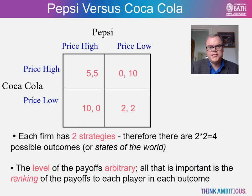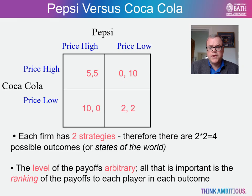We can illustrate this scenario in a simple payoff matrix. Each firm has a strategic choice of whether to price high or price low. Coca-Cola's payoffs are given first in each box and Pepsi's are the second number. The notional numbers represent profits — they're arbitrarily chosen for illustration and hence not denoted in a currency. All that matters for our analysis is the ranking of the payoffs to each firm. Consider: what is the most likely outcome to this game, and what is the Nash equilibrium?